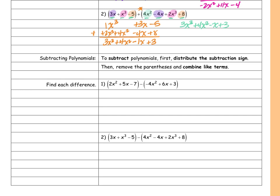So I get 2x squared plus 5x minus 7. Then I distribute this negative sign — minus and minus is plus 4x squared, a negative times a positive is negative 6x, and a negative times a positive is negative 3. Now I combine like terms: 2x squared plus 4x squared gives me 6x squared, 5x minus 6x is negative x, and negative 7 minus 3 is negative 10.